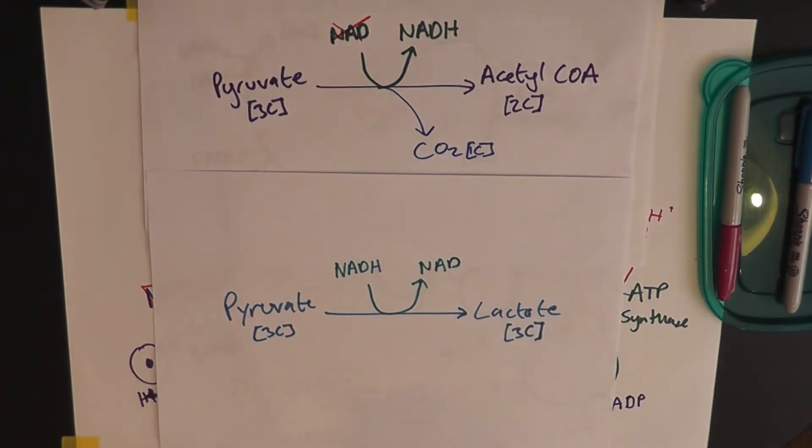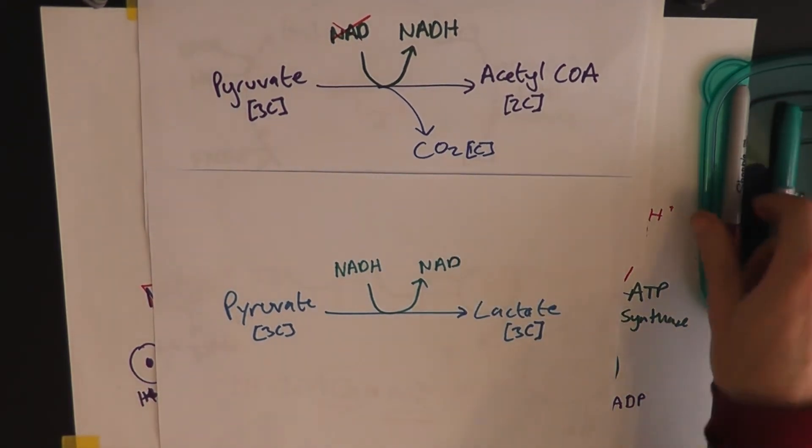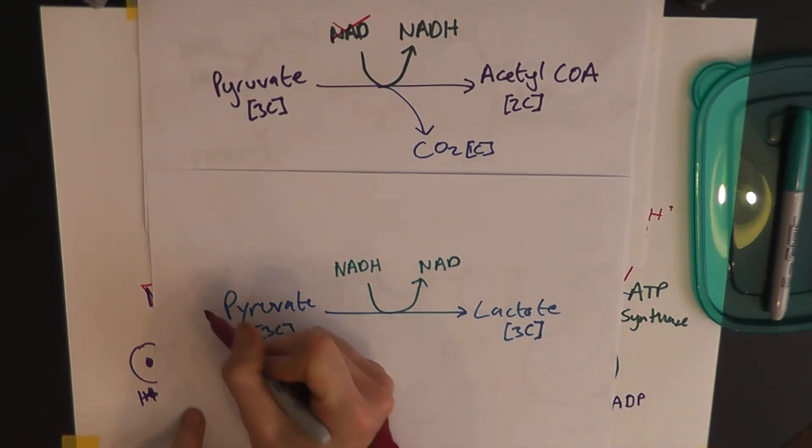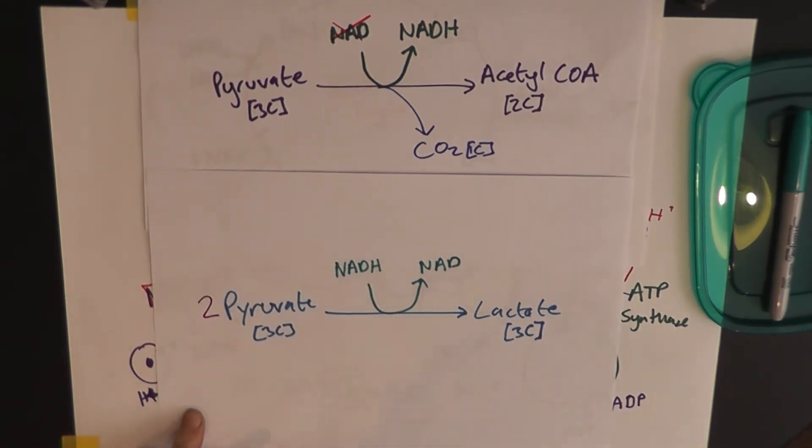And when I say a little bit, this is what I mean. For every glucose molecule that you've got, you get two three-carbon pyruvates. And that makes sense, because glucose is a six-carbon molecule.